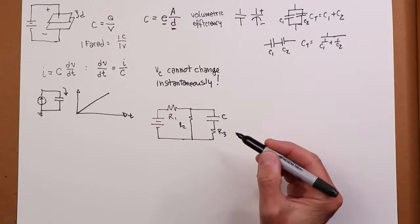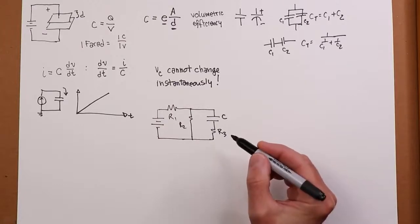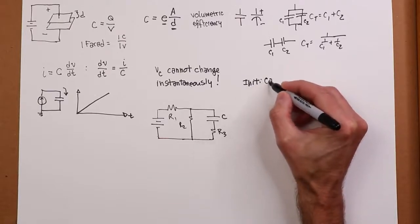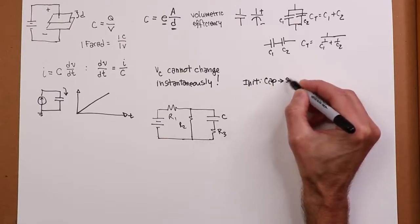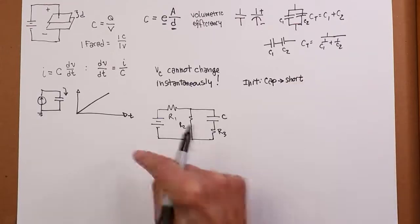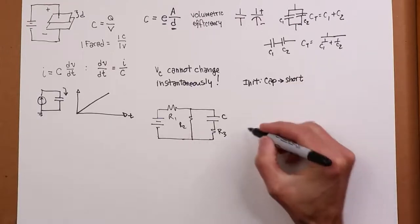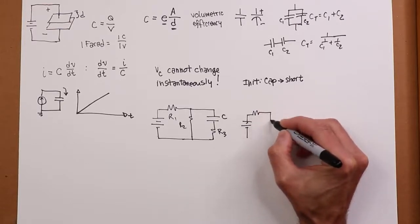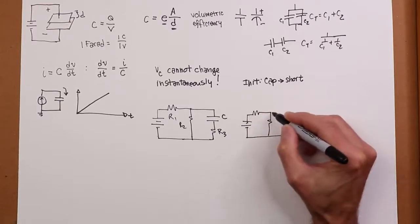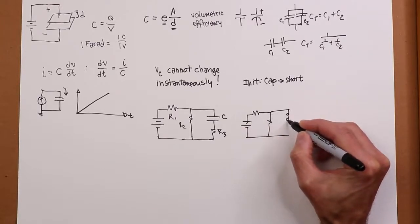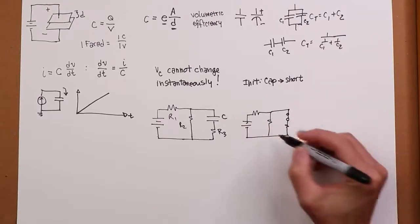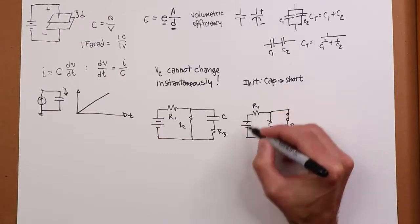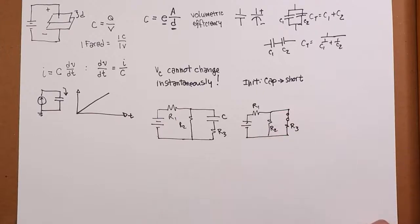Well if you think about it, that means it looks like a short. So initially, cap looks like a short. So we have, as soon as we power it up, a circuit that looks like this. Here's the cap, I'm just going to put a little shorting bar in here. So initially R2 and R3 are in parallel. This is the circuit we see for the initialization.